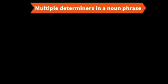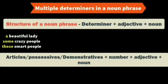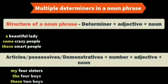We can have multiple determiners in a noun phrase — there will be three or four determiners. The structure of a noun phrase is determiner plus adjective plus noun. For example: 'a beautiful lady,' 'some crazy people,' 'these smart people.' Copy down these structure patterns — multiple determiners will come in such a structure in a sentence.